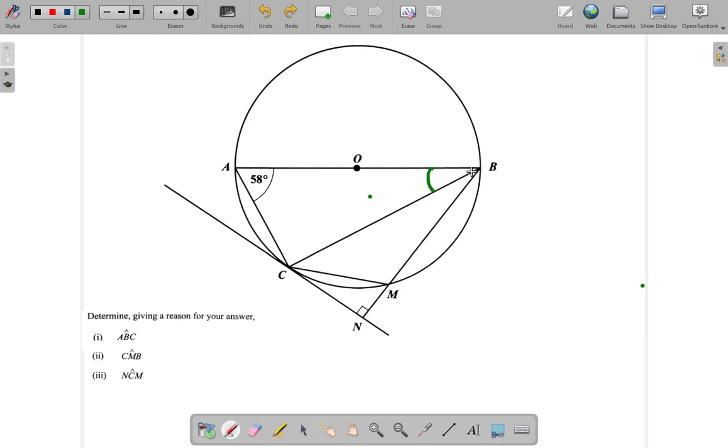Notice AB is a diameter because it runs through the center. When you have an angle formed on the diameter at the circumference, the angle that lies on the diameter, when you have an angle that lies on the diameter and is subtended at the circumference, that angle is always 90 degrees. So this is a 90 degree angle.